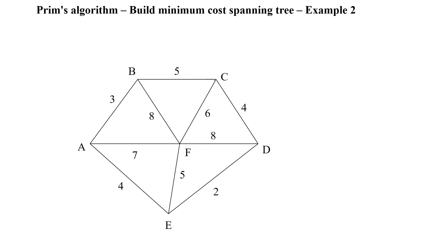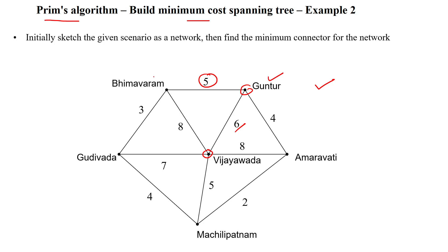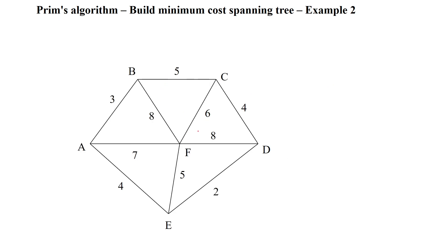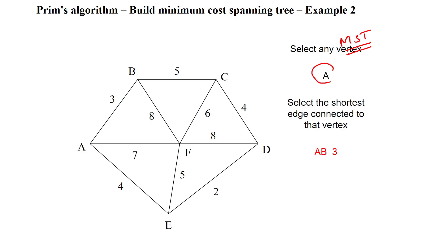From the given cities, I have taken alphabets A, B, C, D, etc. We have to construct the minimum spanning tree by selecting any vertex randomly. Here, I am selecting vertex A randomly. As per Prim's algorithm, we must select the minimum weight edge. Vertex A has 3 outgoing edges; among them, 3 is the minimum. So, I will select the edge with cost 3, between vertices A and B.